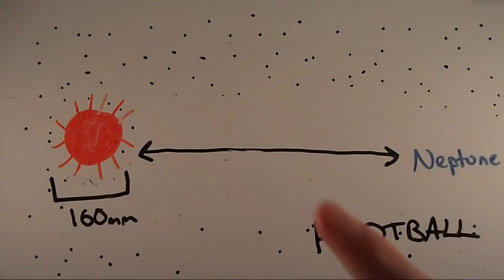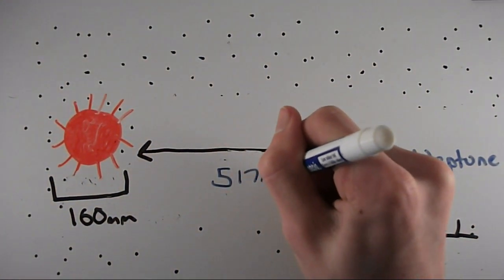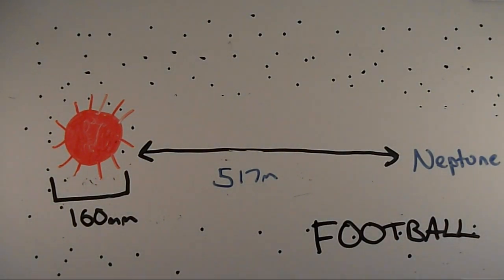The furthest planet away, Neptune, would be 517 meters away from the 16 centimeter diameter sun. Earth would only be 17 meters away from the sun and would be 1.4 millimeters in diameter.